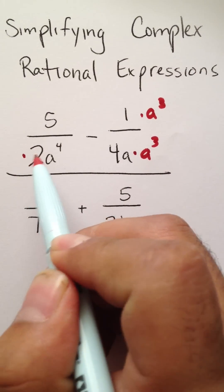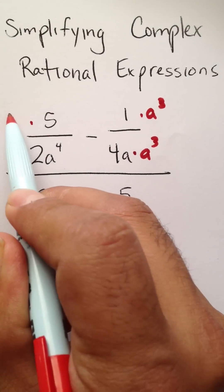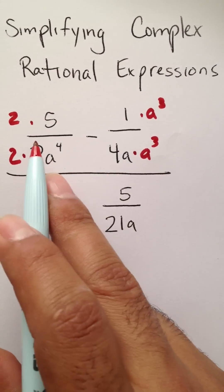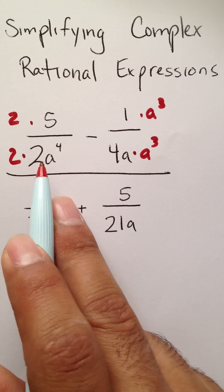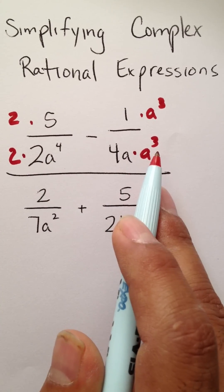This will then allow me to multiply this by 2 and this by 2. The numerators, the entire numerator, will now have the same denominator, 4a to the fourth power and 4a to the fourth power.